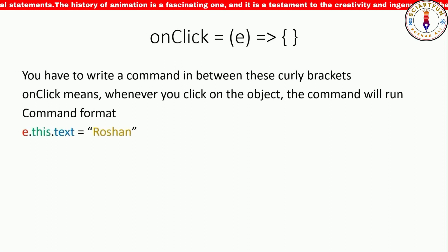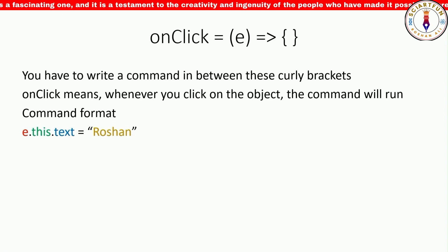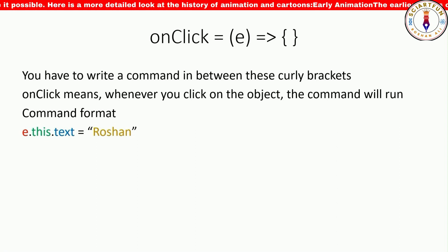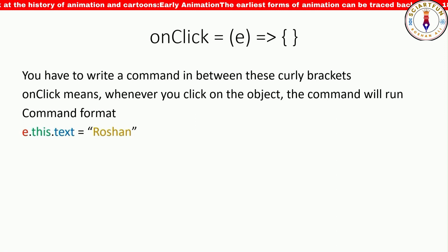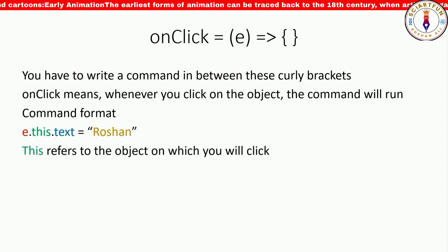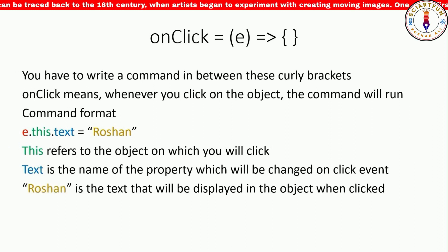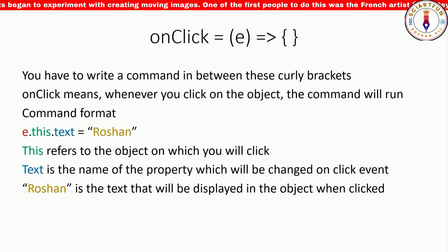Remember this is one example of the code — you can write different code, and more examples in detail will be coming in my future videos. For example, you can write e.this.text = "roshan". Roshan is text, therefore I enclosed it inside inverted commas. Here, e means the current scene. This refers to the object on which you will click. Text is the name of the property which you want to change on the click event. Roshan is the text you want to be displayed on the object that is clicked.